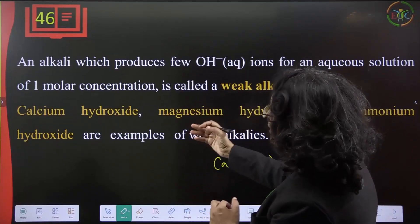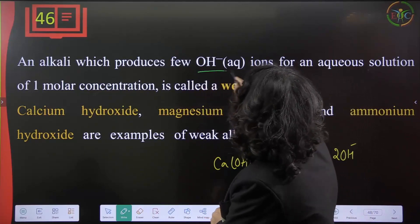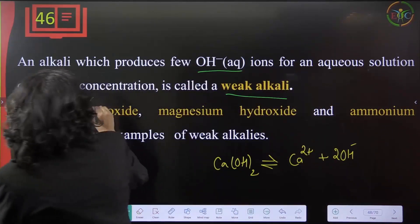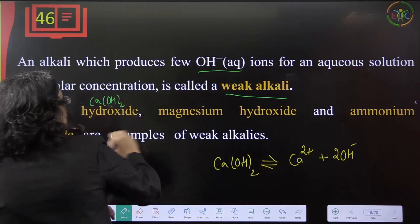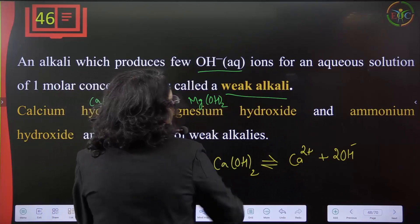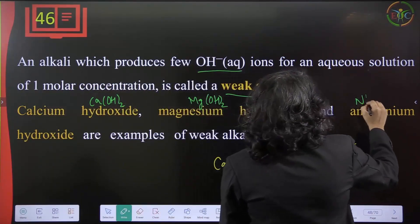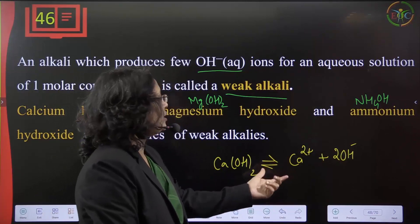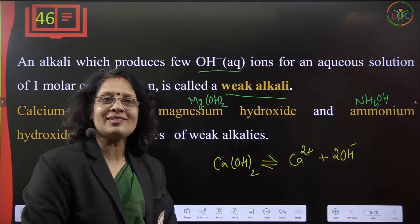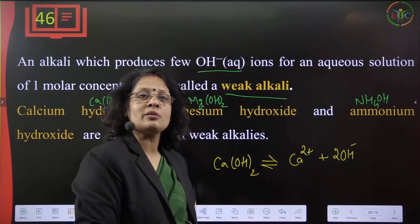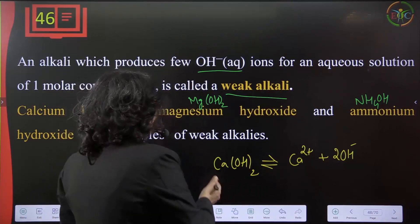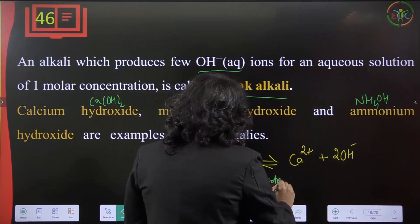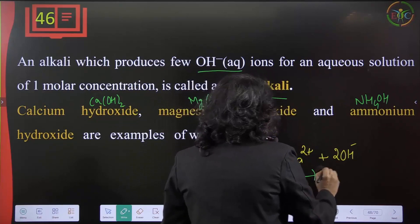Weak bases produce few OH⁻ ions in an aqueous solution of one molar concentration. Examples of weak bases include calcium hydroxide (Ca(OH)₂), magnesium hydroxide (Mg(OH)₂), and ammonium hydroxide. Weak bases are shown with a reversible arrow because ionization is partial — some ions and some undissociated molecules are both present. Calcium hydroxide is a weak base because it ionizes partially.